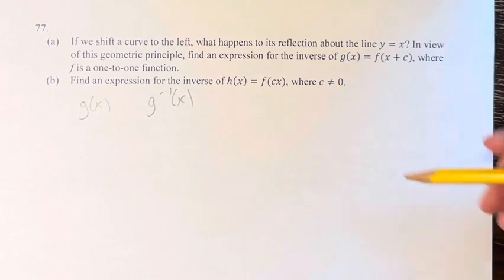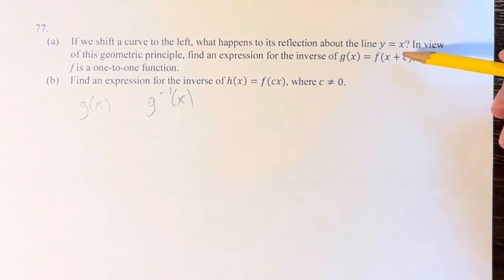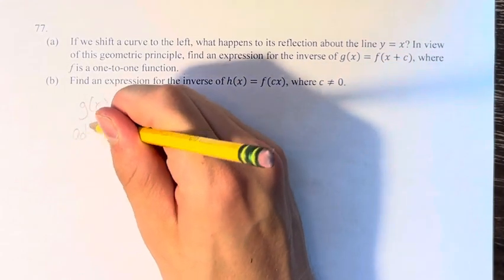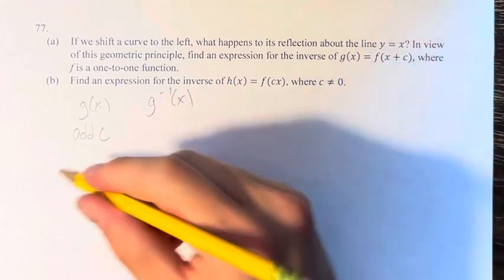So g of x, what we do is, to do it, we take our value x. First, we add c. Then, we calculate f.